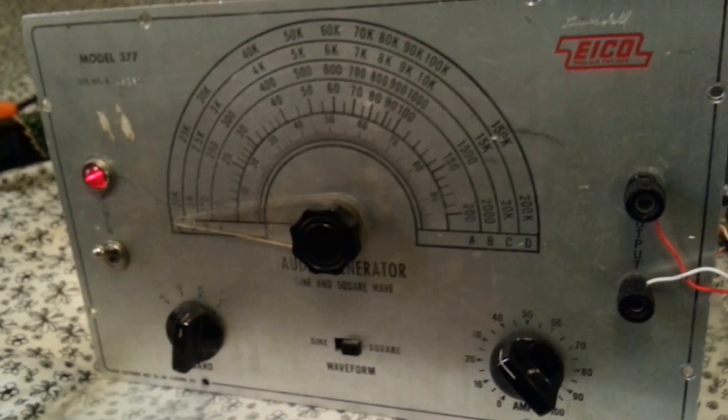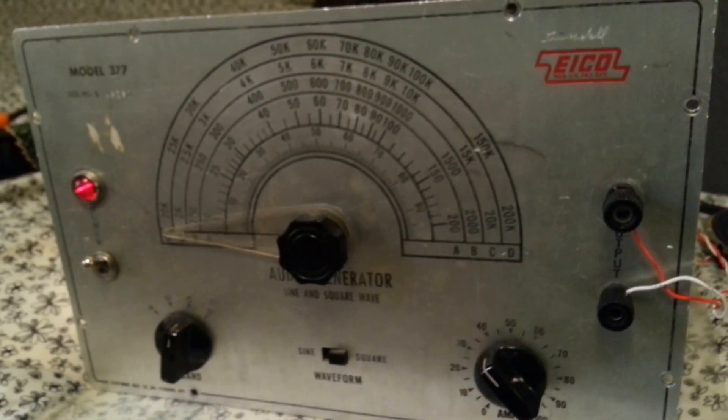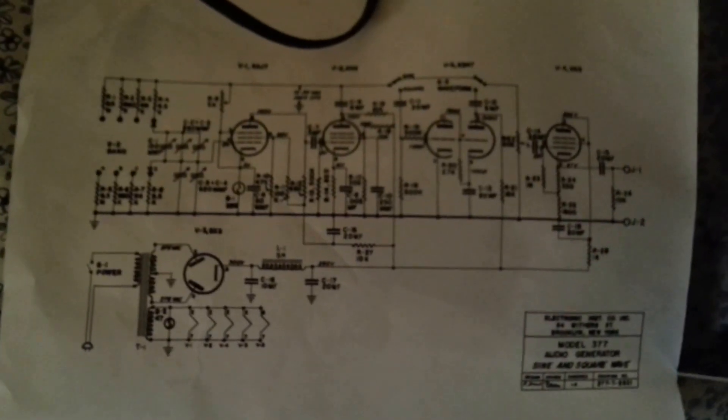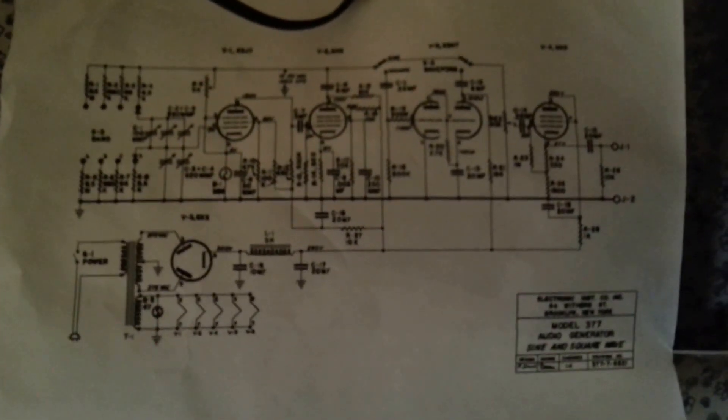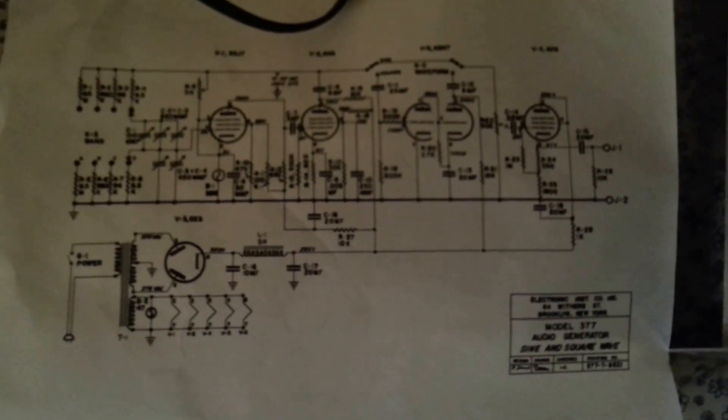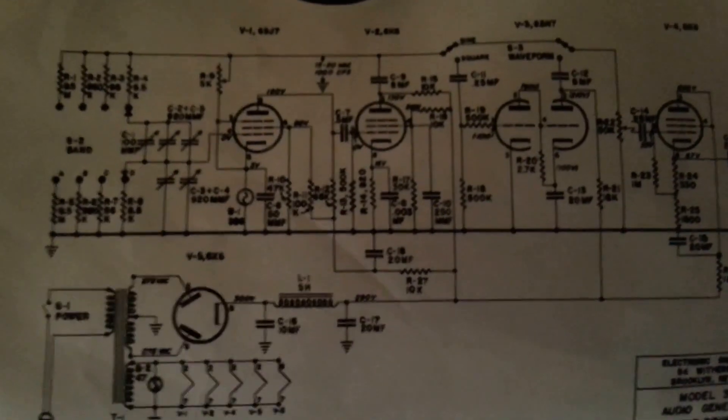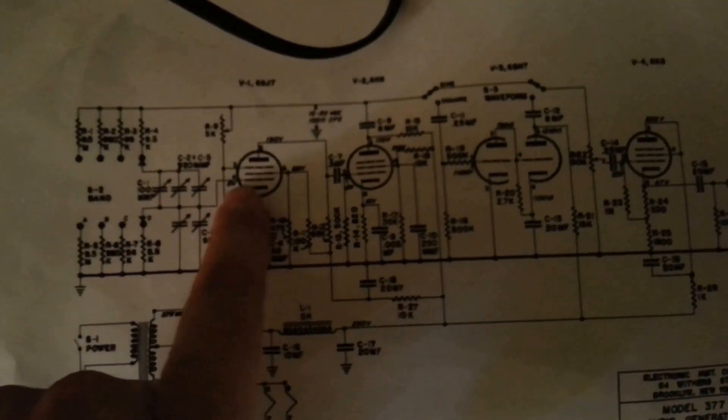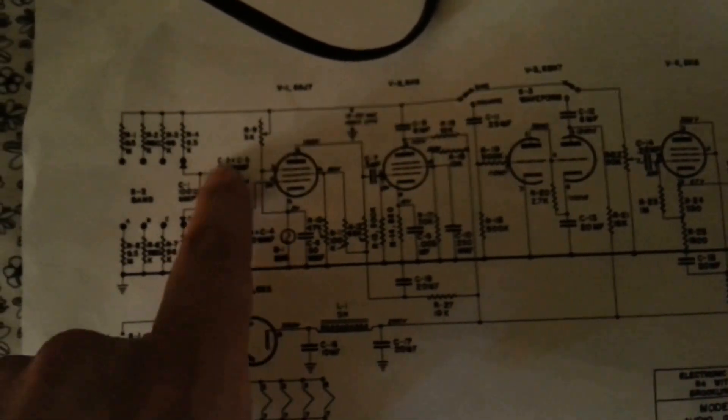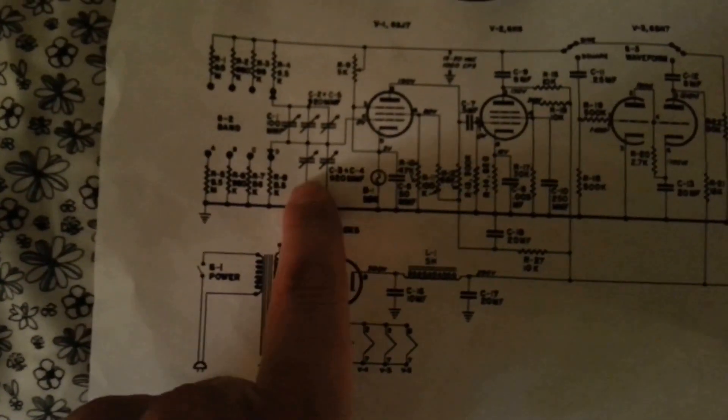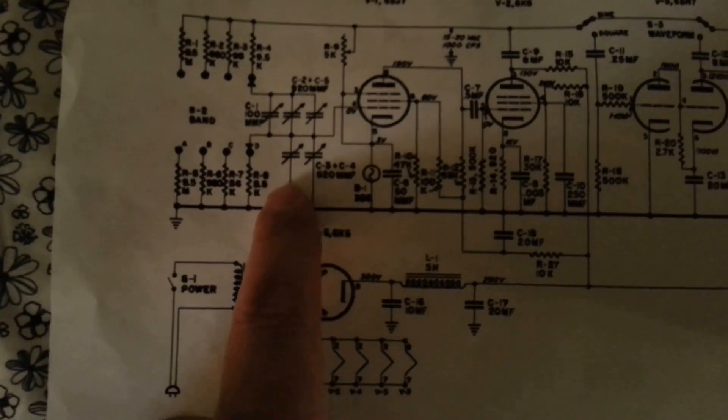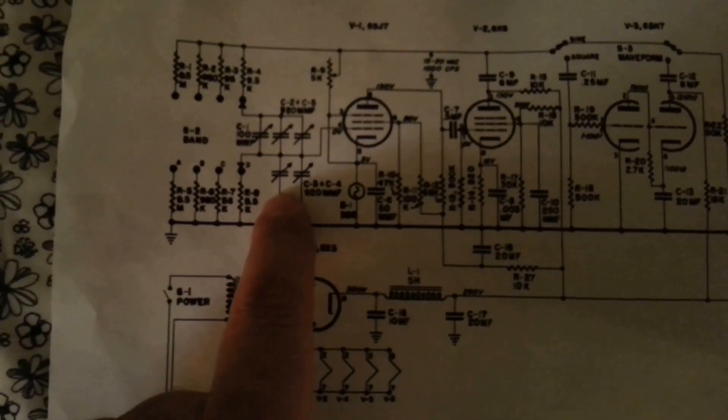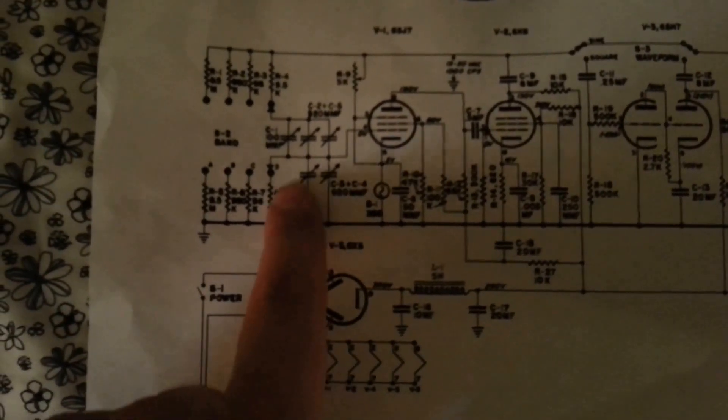There you go. Now I'll pull out the schematic. Here is the schematic of the Electronic Instrument Company number 377 audio generator. Right here is your main oscillator tube, this is the variable capacitor right here. The trimmer capacitor is connected here, this C1 is the trimmer capacitor for the fine adjustment of the output.